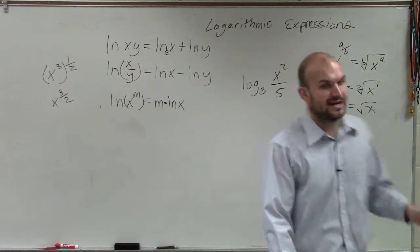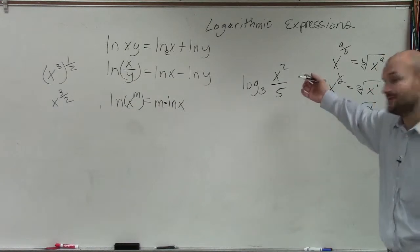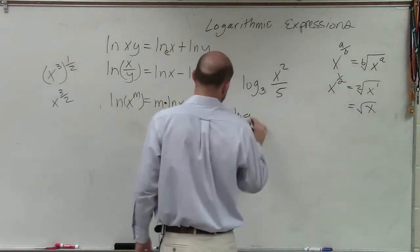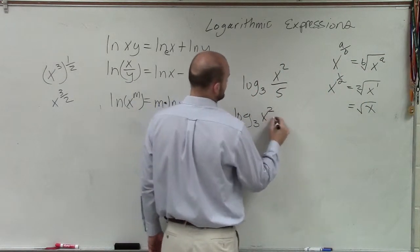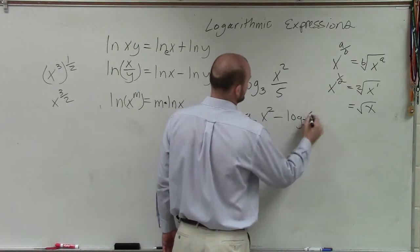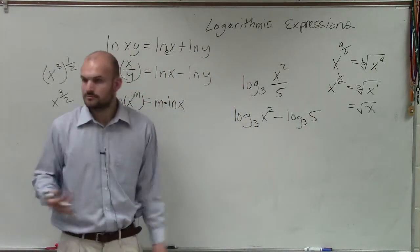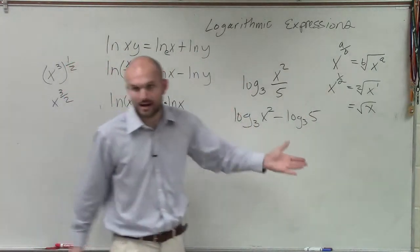So here I have log base 3 of x squared over 5. Again, I have a division problem. So I write this as log base 3 of x squared minus log base 3 of 5, by the rule, by applying the rule.